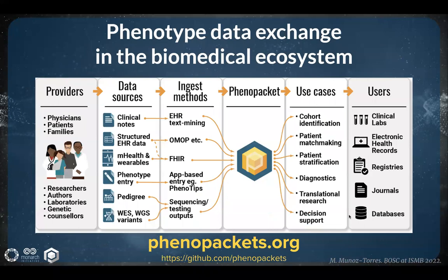Phenopackets will benefit research biologists, physicians, and patients alike. They can support diverse users and use cases in the context of the biomedical ecosystem. There are multiple providers of phenotypic data, including patients and clinicians via a variety of mechanisms including mobile health gadgets and the electronic health record. The Phenopacket Schema acts as a common model that can capture data from all these different sources with a unified software representation, and in turn can be used by multiple receivers of phenotypic information, including journals, databases, registries, and clinical laboratories. Their implementation can improve the speed and accuracy of diagnosis, as well as treatment effectiveness, and can facilitate cohort identification and patient matchmaking during clinical trials.